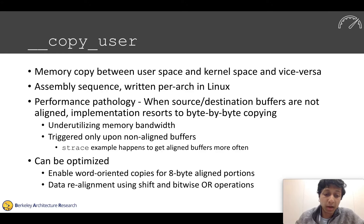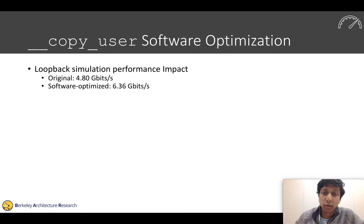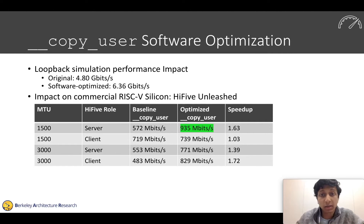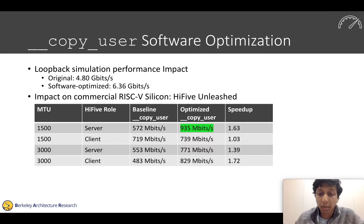This can be optimized — we implemented an optimization so we no longer have this performance pathology with unaligned buffers. Once implemented, our loopback performance goes up to 6.3 gigabits per second. More interestingly, we can immediately deploy this optimization on real shipping RISC-V silicon, like the HiFive Unleashed board, which has a 1 gigabit NIC. Attaching it over Ethernet to another system and running iPerf3, comparing the baseline to our optimized copy_user, we see large speedups — the HiFive Unleashed can get close to saturating its 1 gigabit NIC.